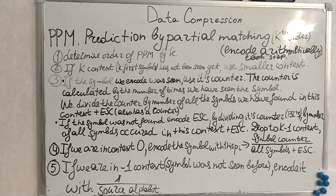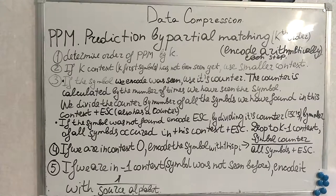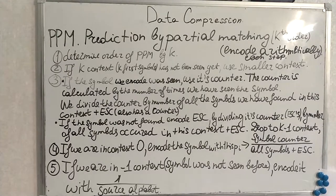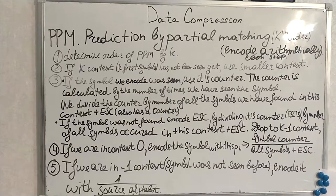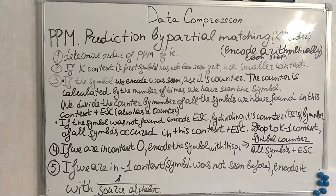If we are in context zero, we encode the symbol with its probability, using the formula in the bottom right corner. If the symbol has not been seen yet, we use minus-one context. I think it will be much clearer with the examples — I'll give a little bit more theory now and then we'll jump to the examples.